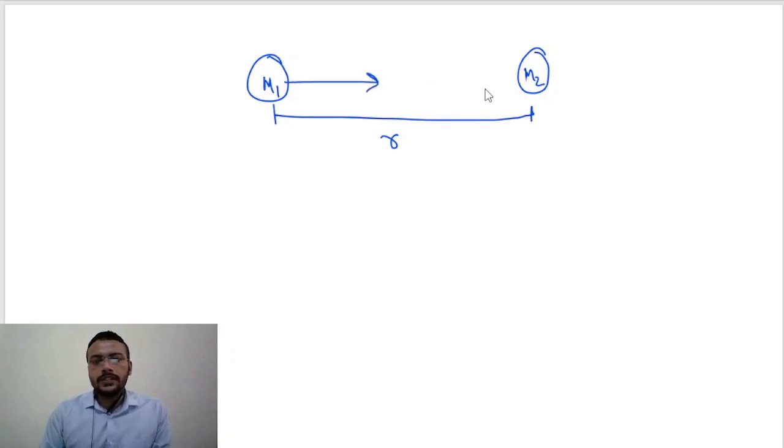So Newton said that both of these bodies are going to experience a force toward each other, and the magnitude of this force is equal for both the bodies. That means the force that body one is experiencing equals the force that body two is experiencing, and he said that this force is gravitational force.